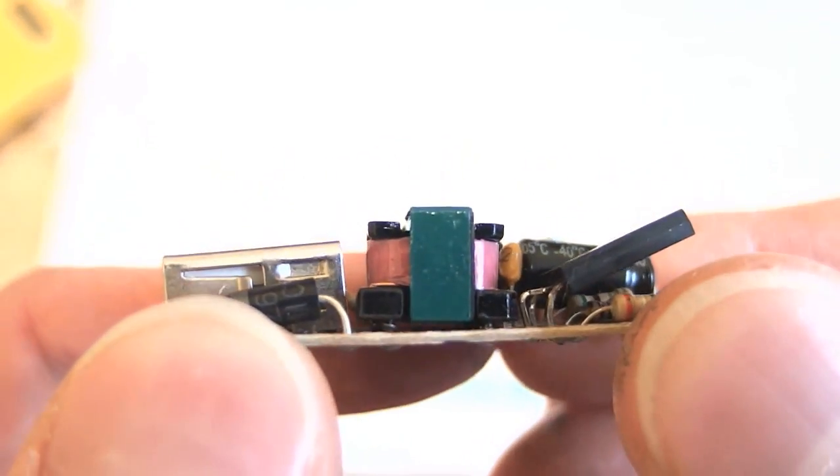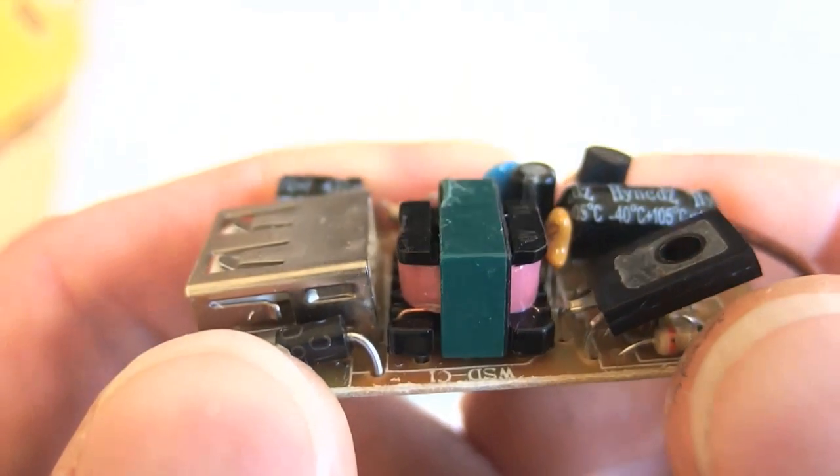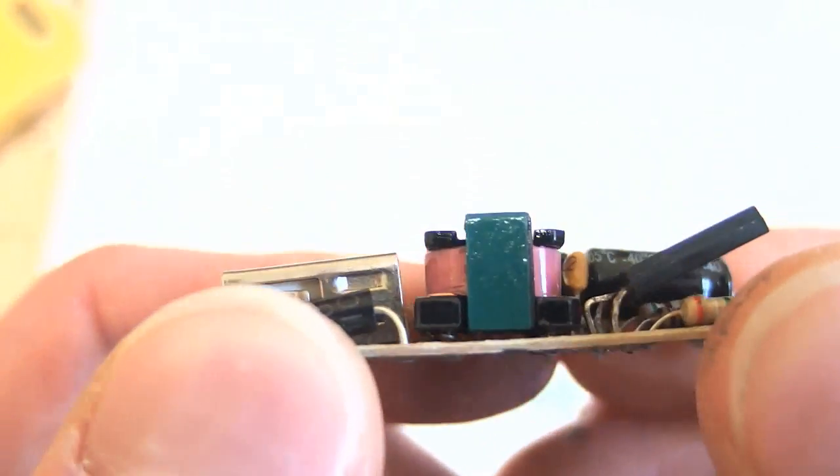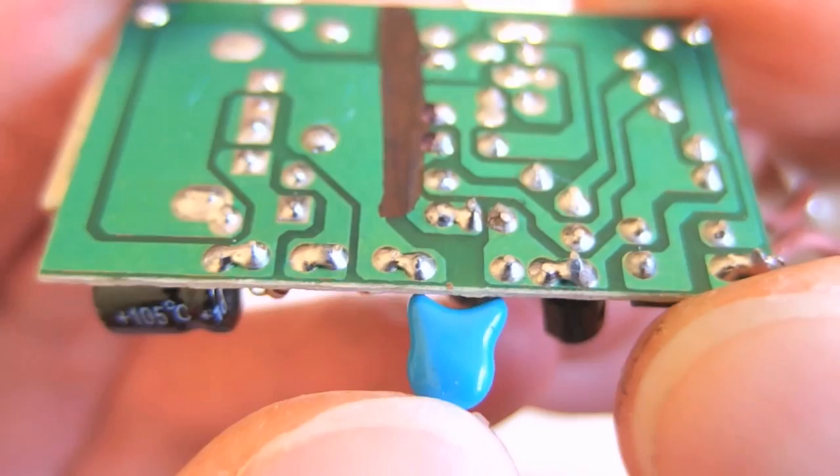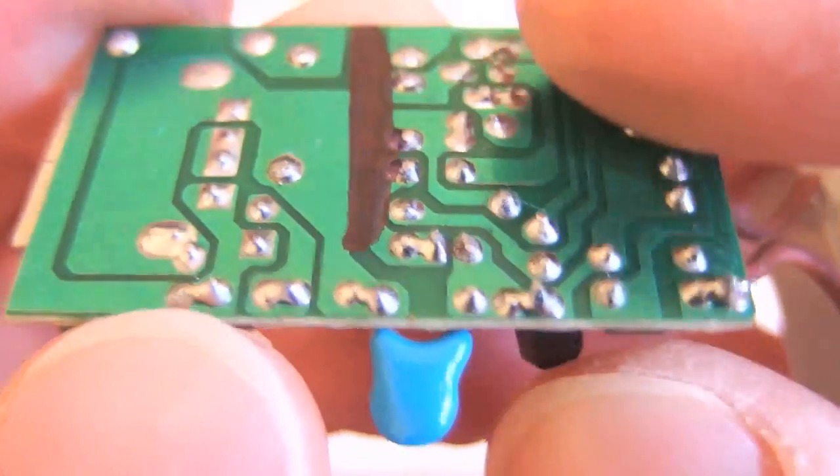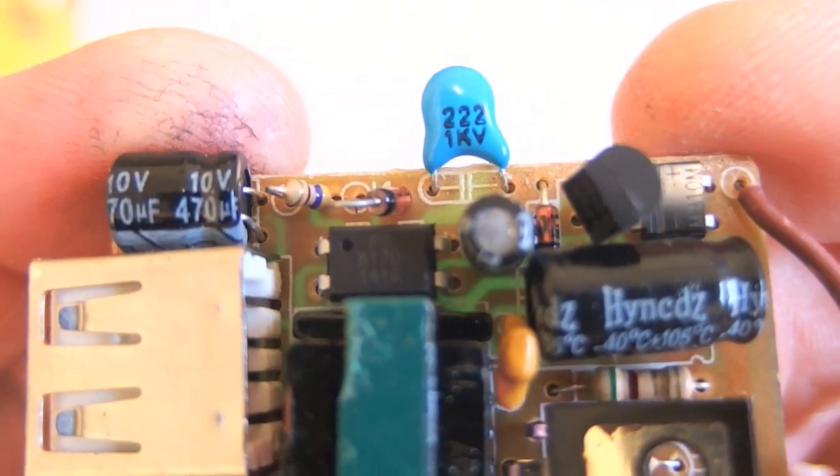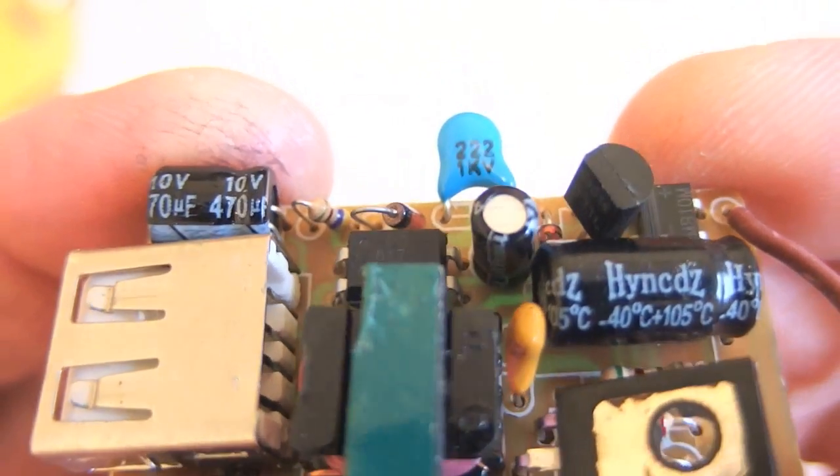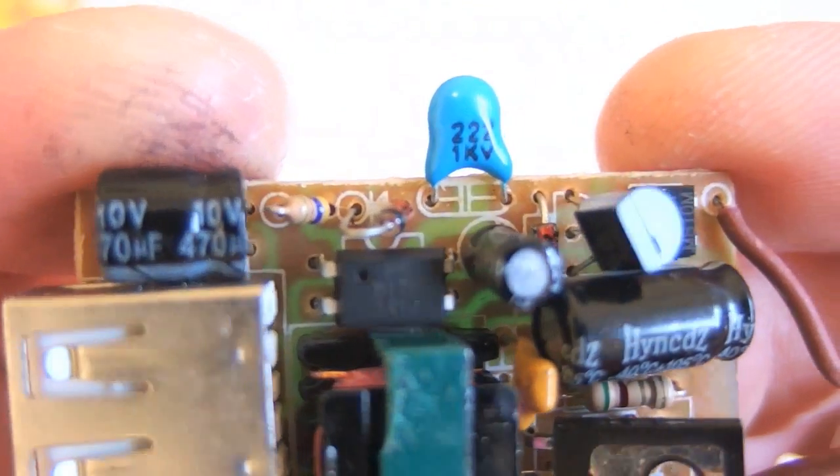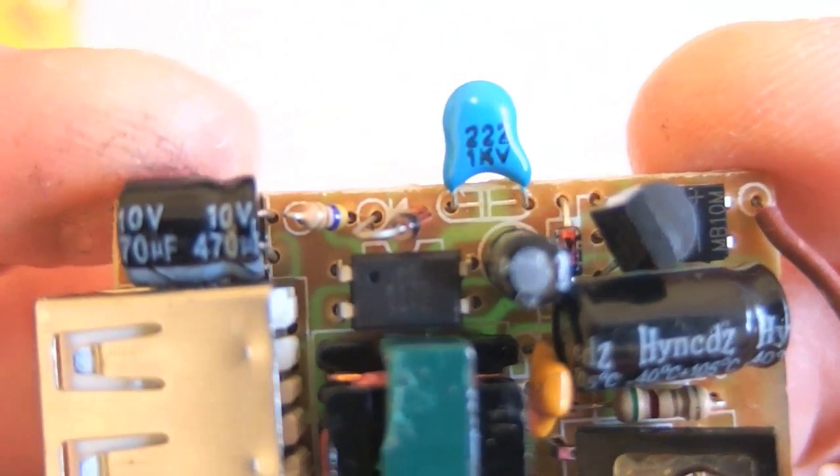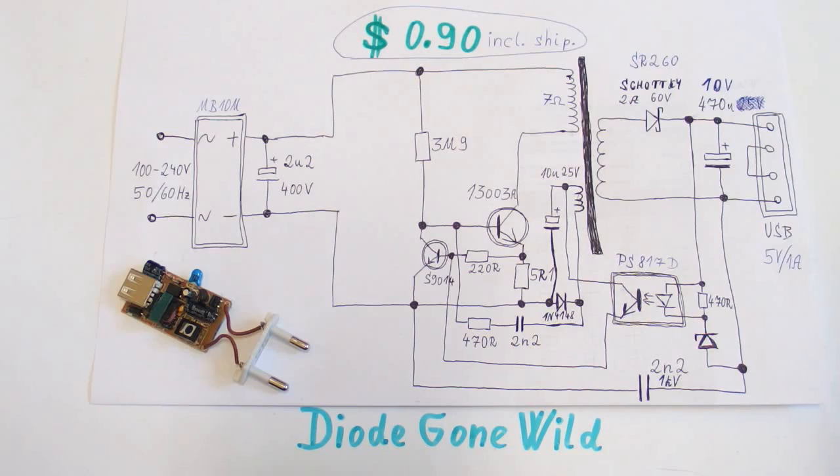And there is a questionable switching transformer. I'm really not sure how much isolated this one is. And there is an interference capacitor in between primary and secondary side. It's 2.2 nano and rated only one kilovolt. And I don't think it's good to have just one kilovolt capacitor in between mains and you.